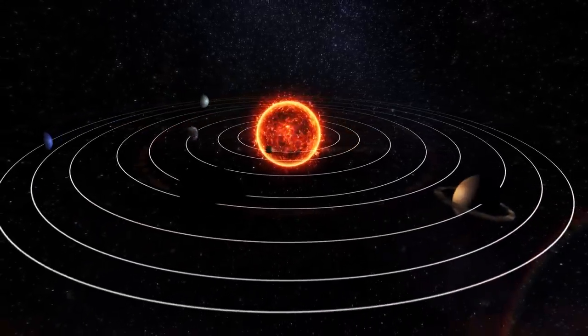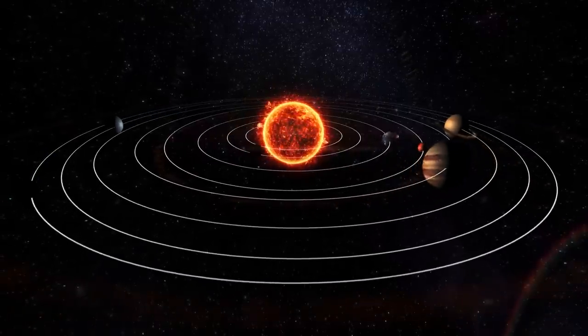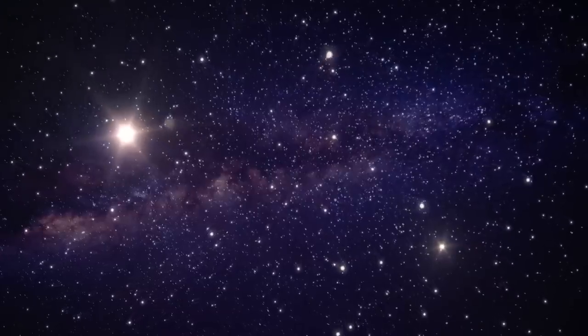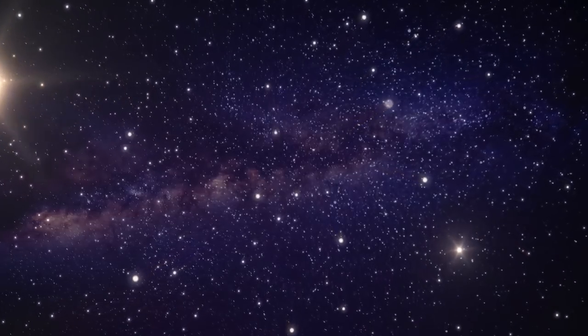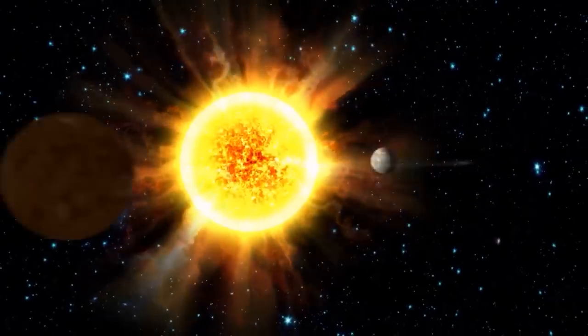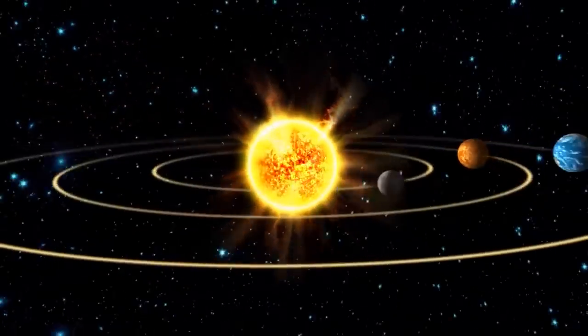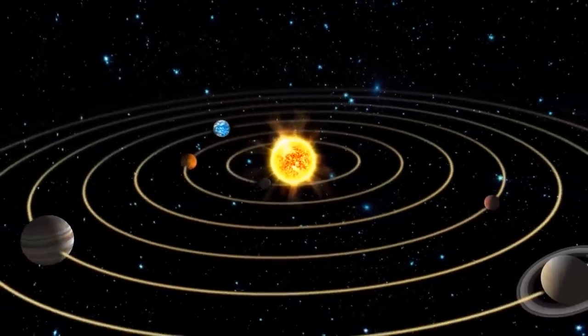The planetary system in which we evolve is the solar system. It is part of the Milky Way galaxy and is located in the Orion Arm, a star-forming region. The solar system consists of a star, the sun, and various celestial objects orbiting it.